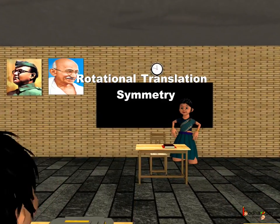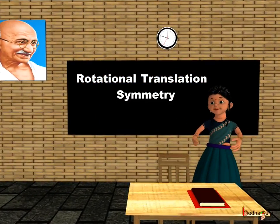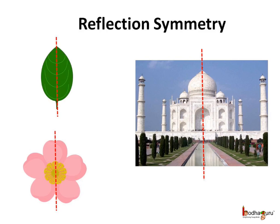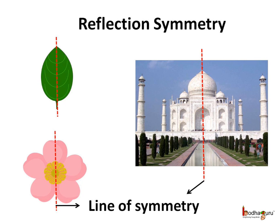Good morning children, today we shall learn more about symmetry. We already know about the mirror symmetry, which is also called the reflection symmetry. If an object or a figure has reflection symmetry, then we can divide it into two identical halves — like this leaf, this flower, and this picture of the Taj Mahal monument. The line which divides the shape into two identical halves is called the line of symmetry.